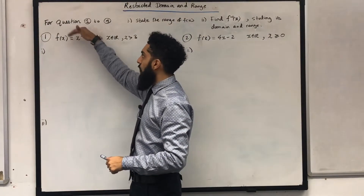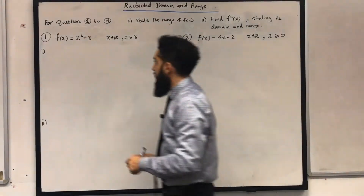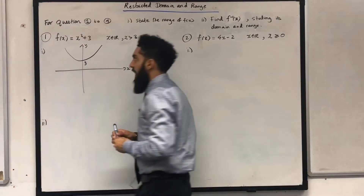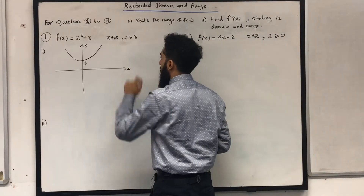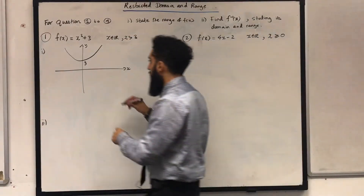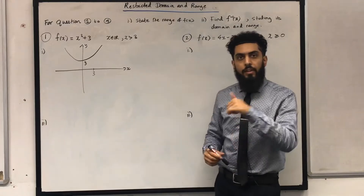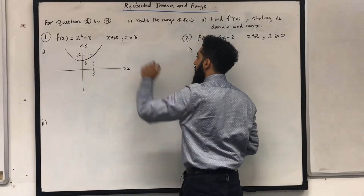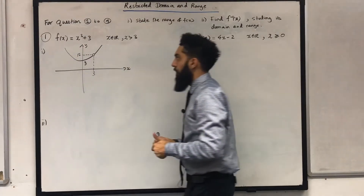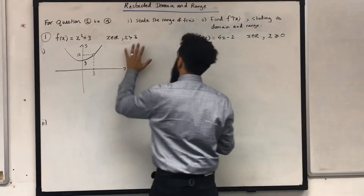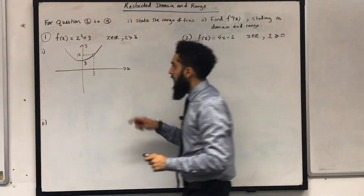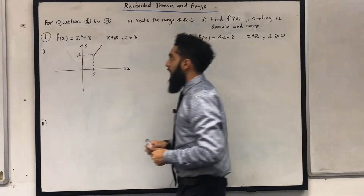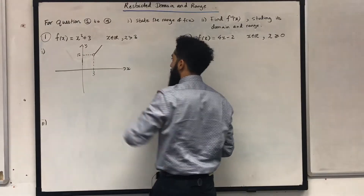My very first step is to sketch f of x equals x squared plus 3 for the domain x is any real number. Now I'm going to restrict my domain to x is greater than 3. I'm going to label x equal 3. Put 3 into the function: 3 squared is 9, plus 3 is 12. So at x equal 3, I have a y value of 12. Because x equal 3 is not included in the domain, I draw a circle and don't shade it. I rub out the curve for x less than or equal to 3.